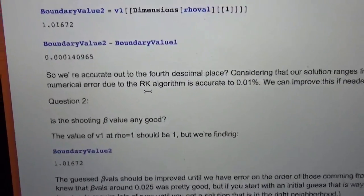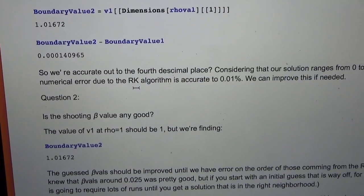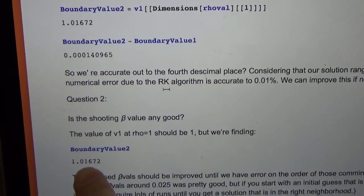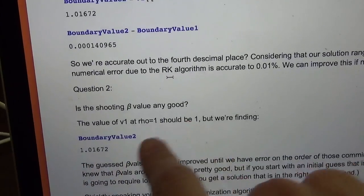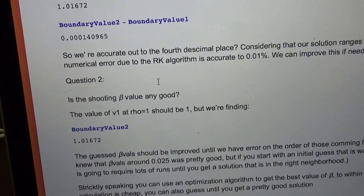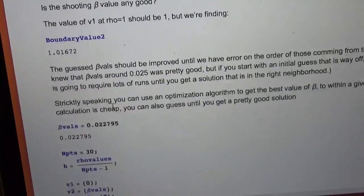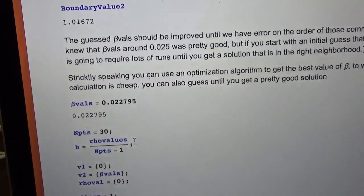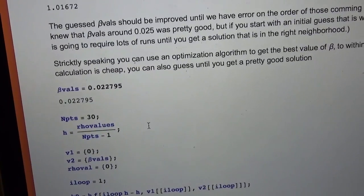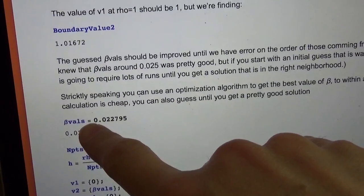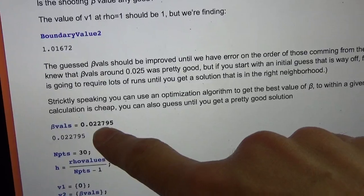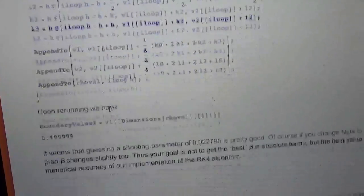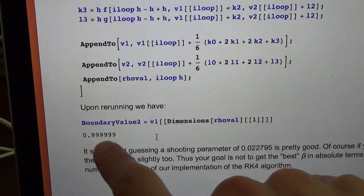What you can do is go through and step through this again, and here I just stepped through and manually changed that value. If you pick a shooting value of 0.022795, run through the whole algorithm again, it comes out really close.